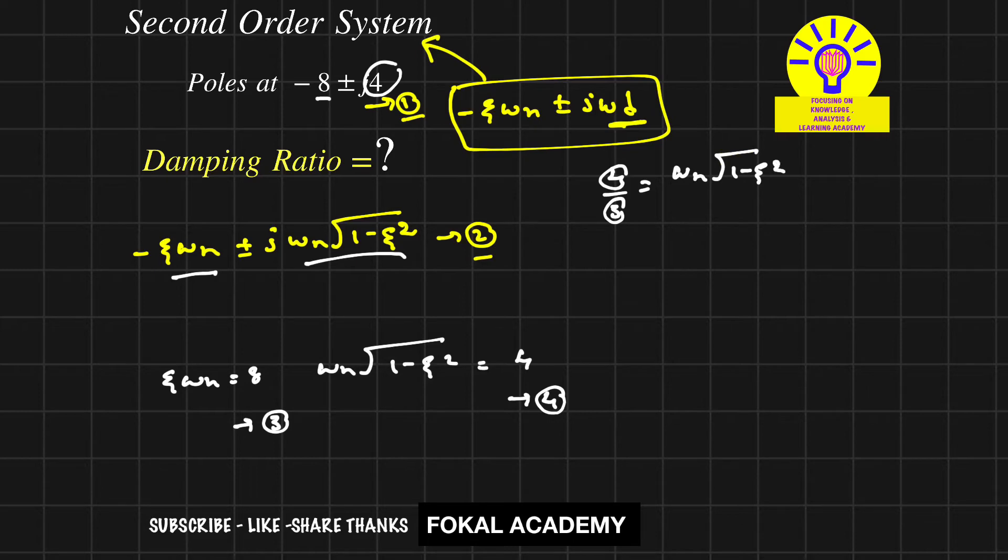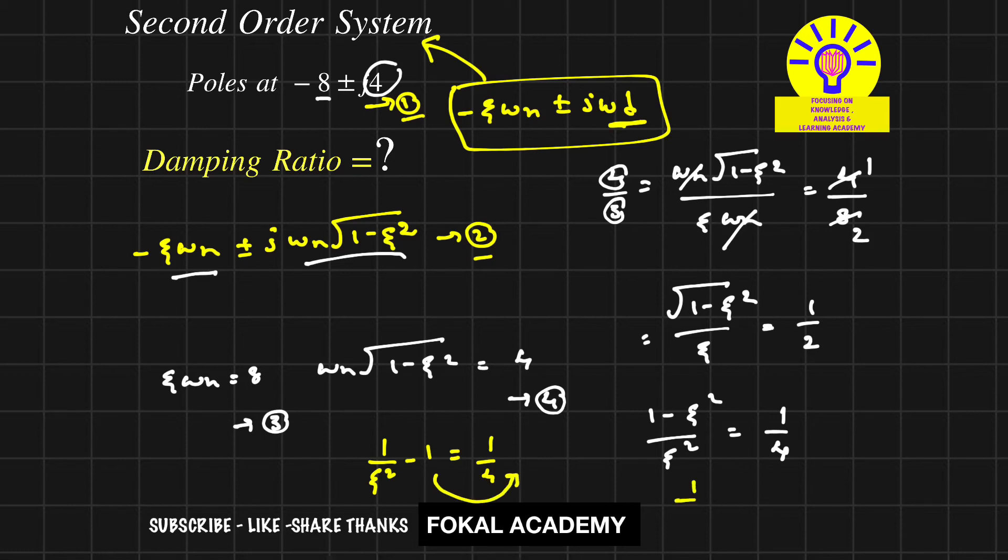Now, dividing equation 4 by equation 3 gives √(1-ζ²)/ζ = 1/2. Squaring both sides: (1-ζ²)/ζ² = 1/4. Rearranging and simplifying, we get 5ζ²/4 = 1.